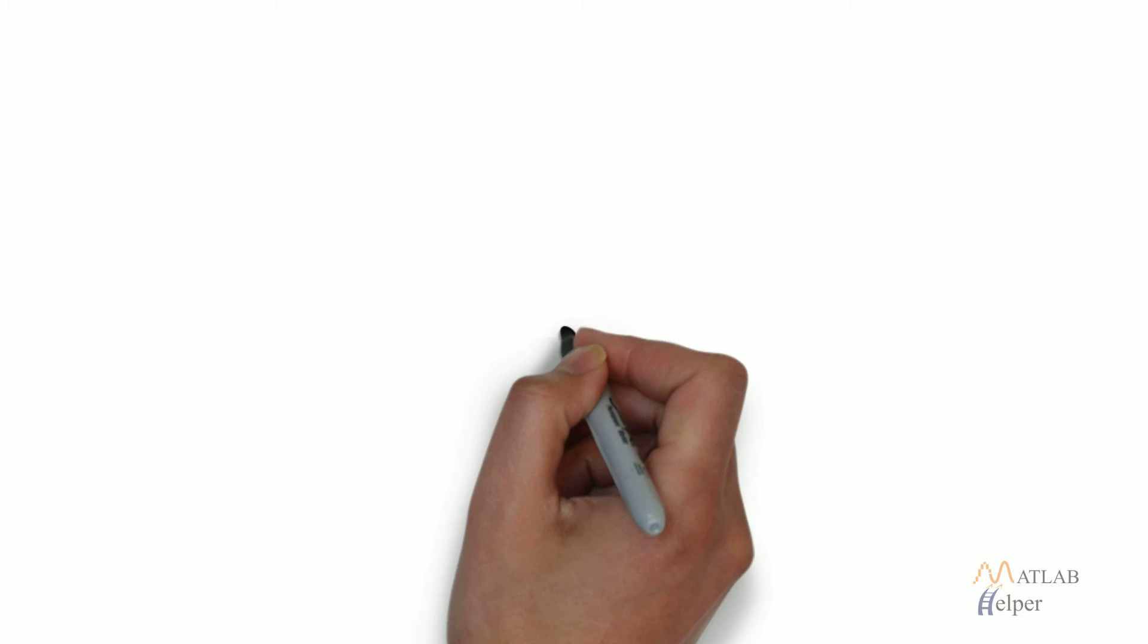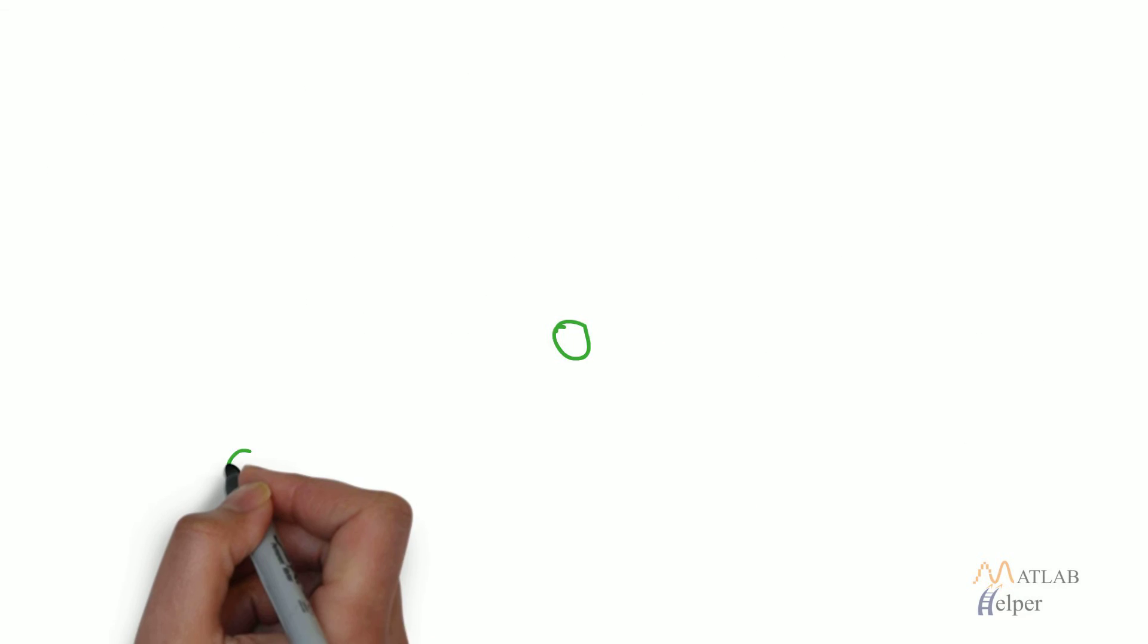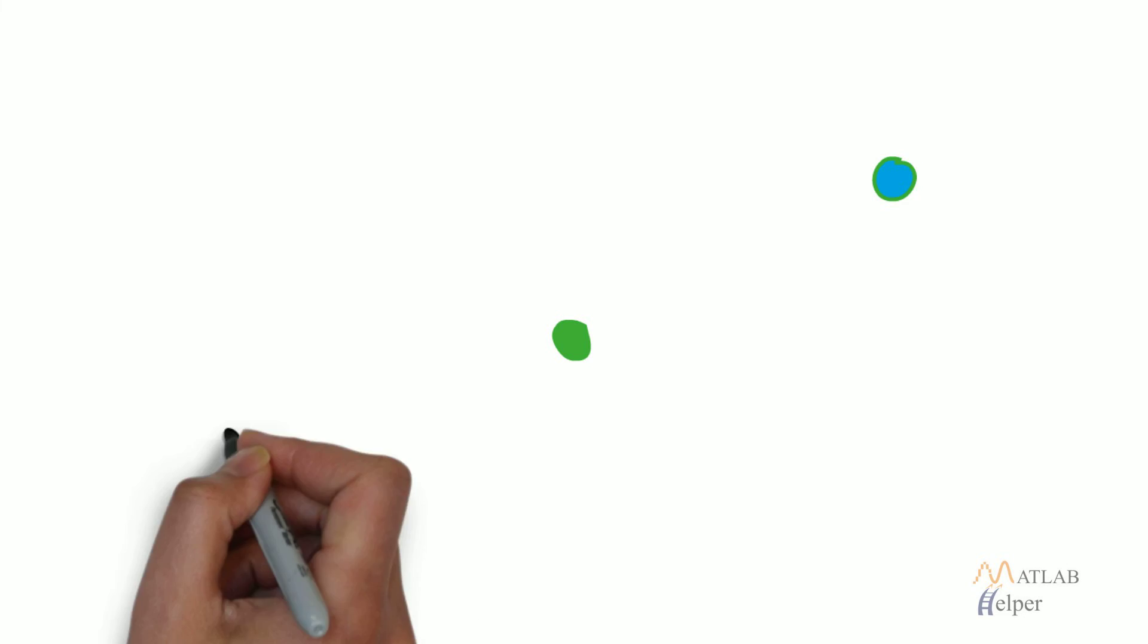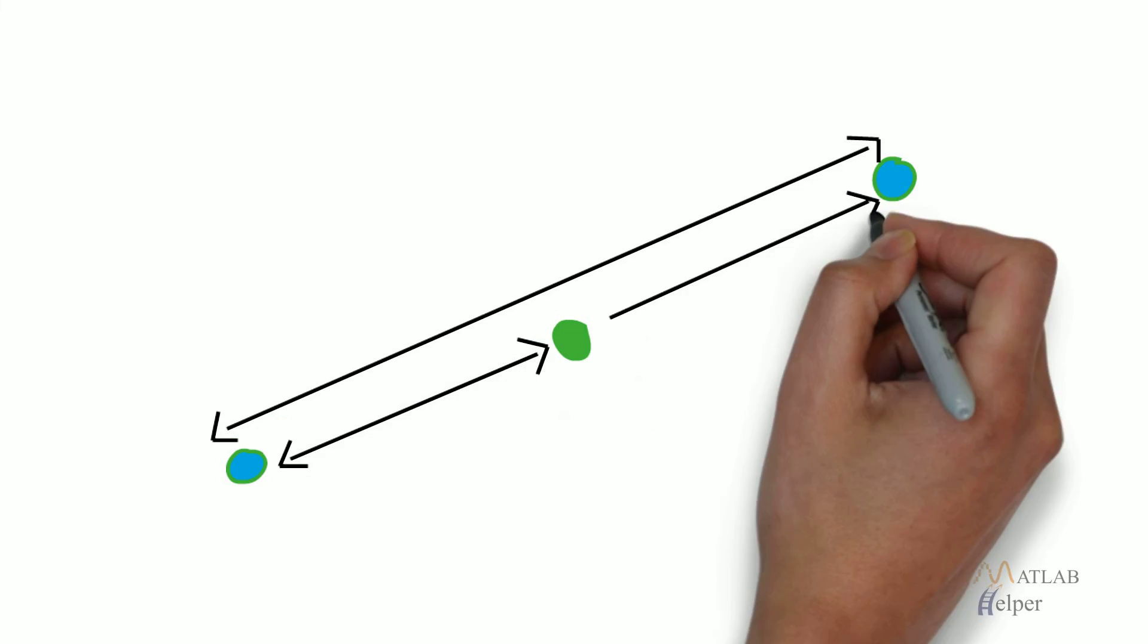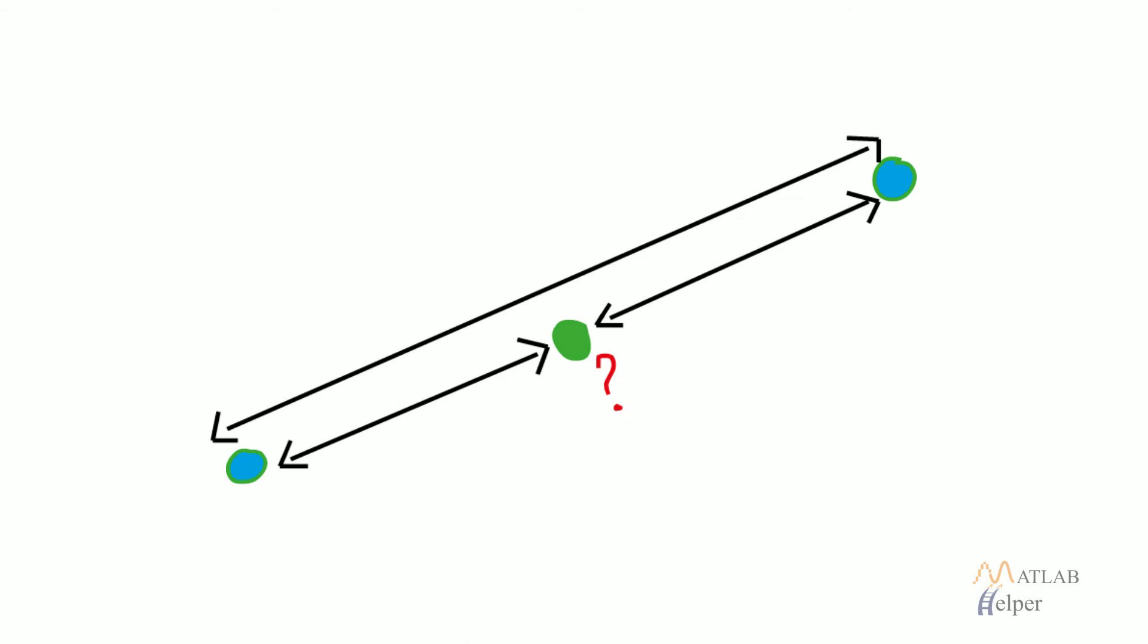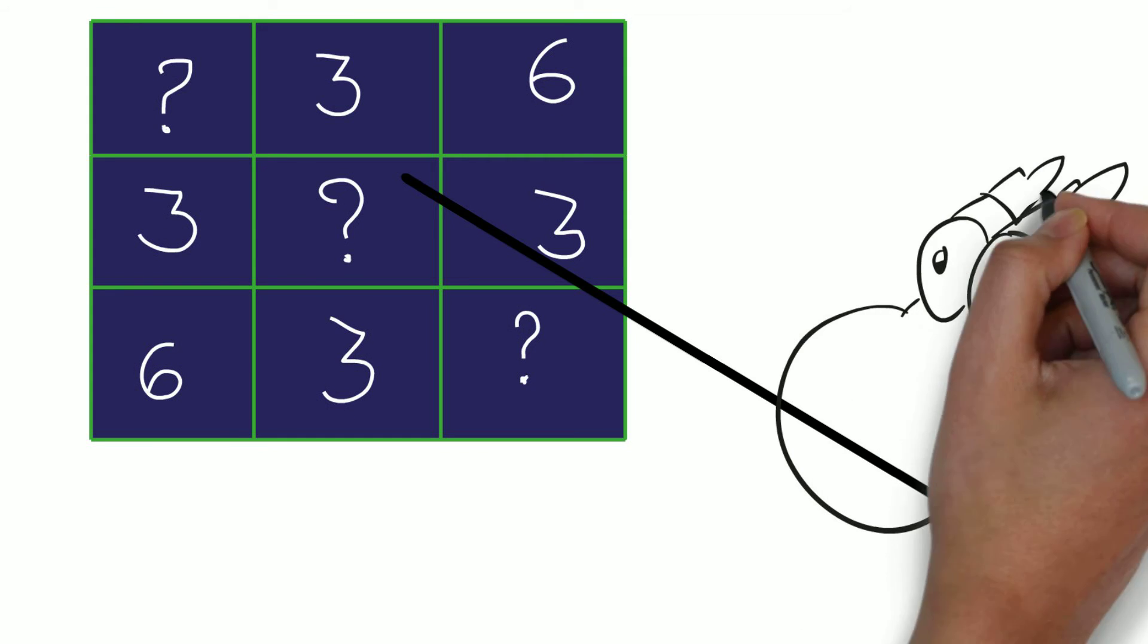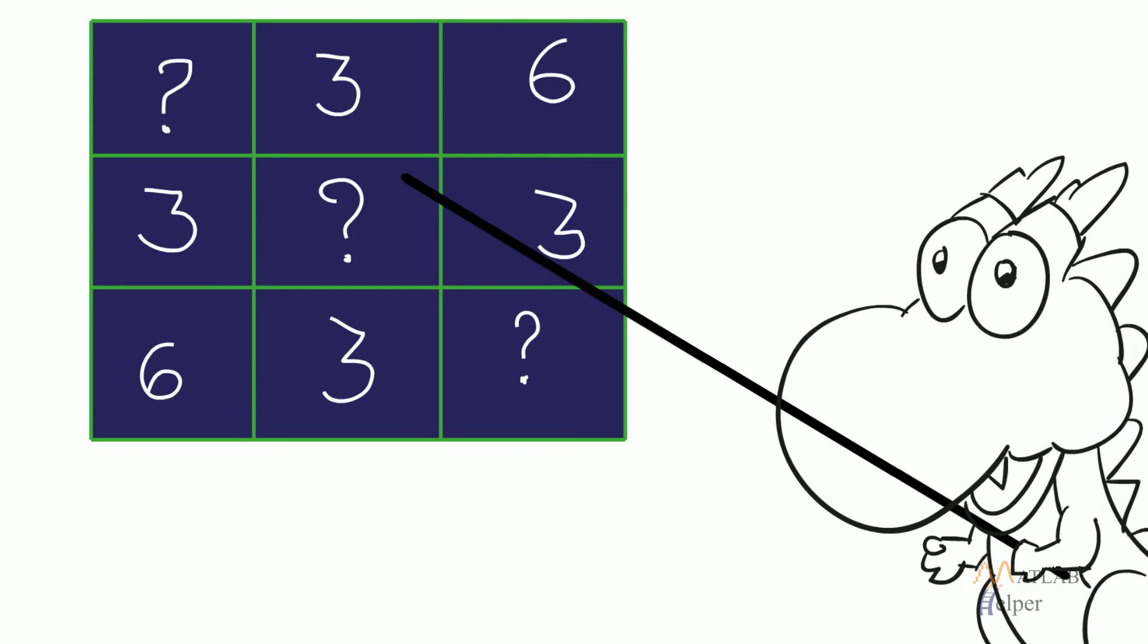Interpolation is the process of creating new data points when some points are already given. Based on the position of these already existing points, we can find the location of a new point. This is very useful when we need to find out some missing values in a set of data points.